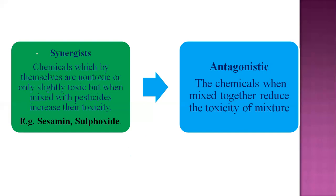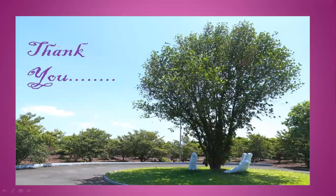Antagonist: it is also a chemical compound, but when mixed together with a pesticide it immediately reduces the toxicity action. So antagonistic means to reduce toxicity, whereas synergist means to increase toxicity. These two terminologies are very important. Thank you very much. This is the overall topic of today's lecture on pesticide formulation.